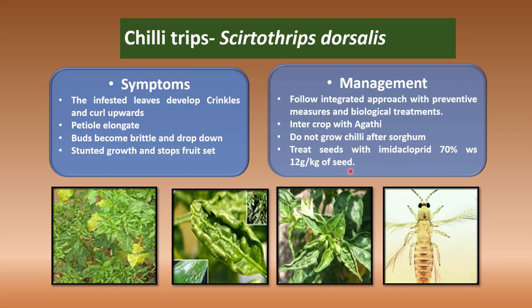For additional thrips treatment, not only imidacloprid — you can also apply carbofuran at 3% granules at 33 kg per hectare, or at 10% at 10 kg per hectare. You should follow either imidacloprid or carbofuran for management.